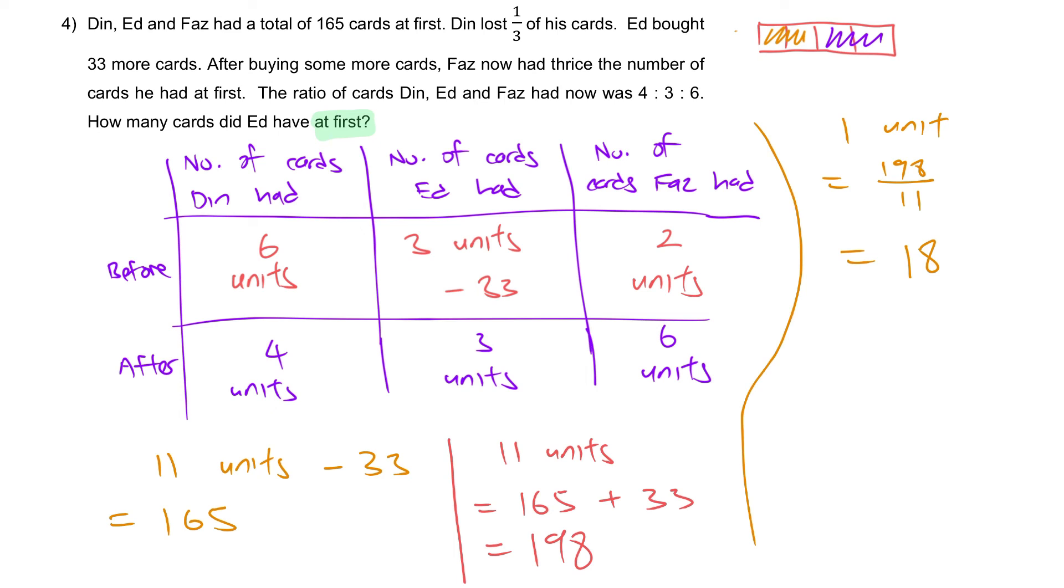Finally, how many cards did Ed have at first? This is the one we are trying to find. Number of cards Ed had at first, 3 units minus 33. So, 3 units first. After that, we're going to minus 33 to give us the answer of 54 minus 33. That will give you 21.